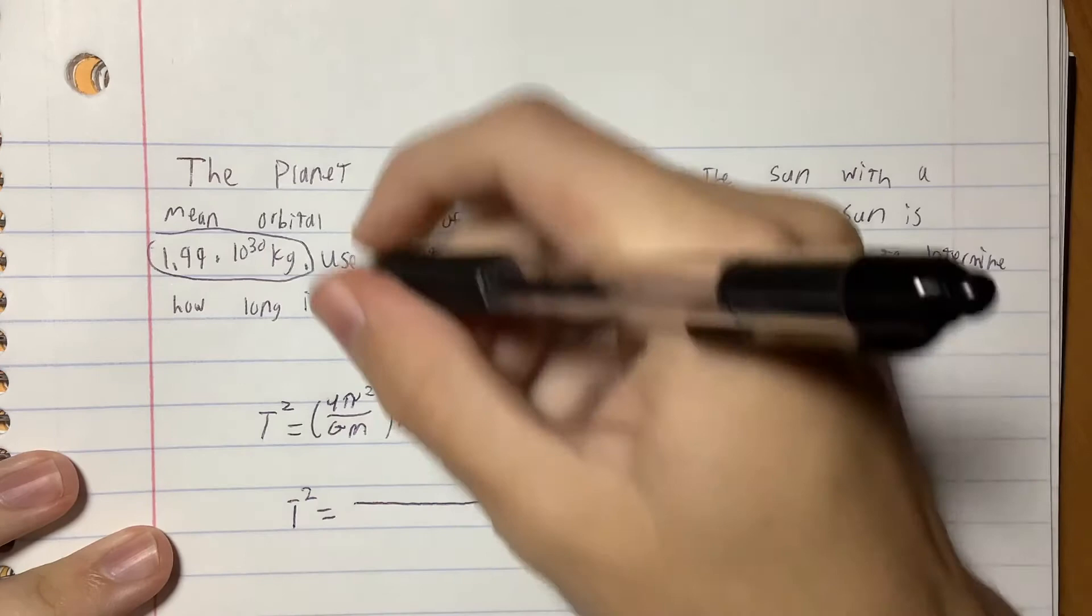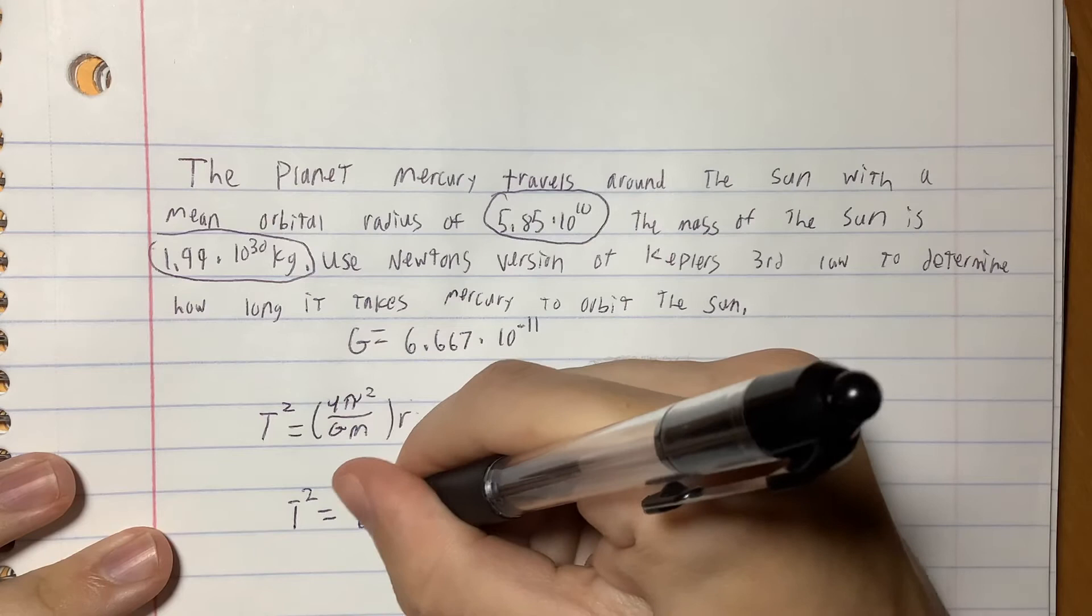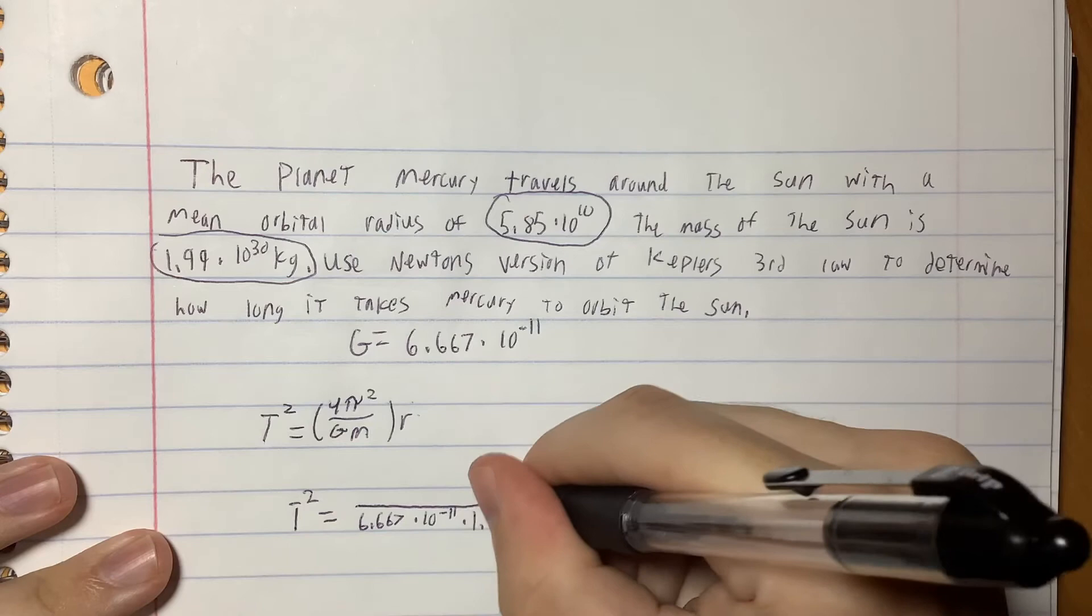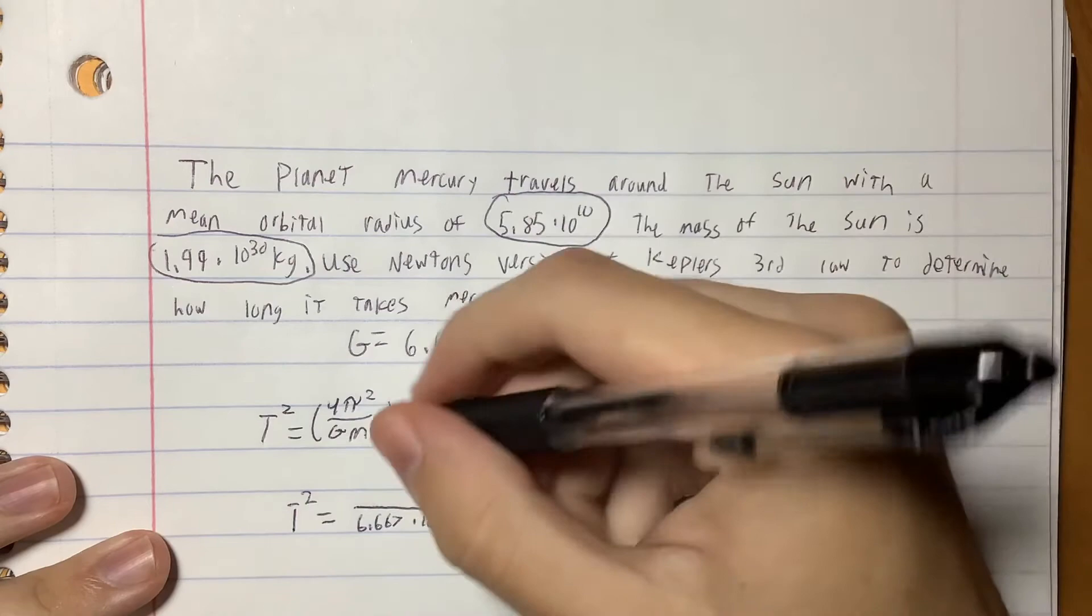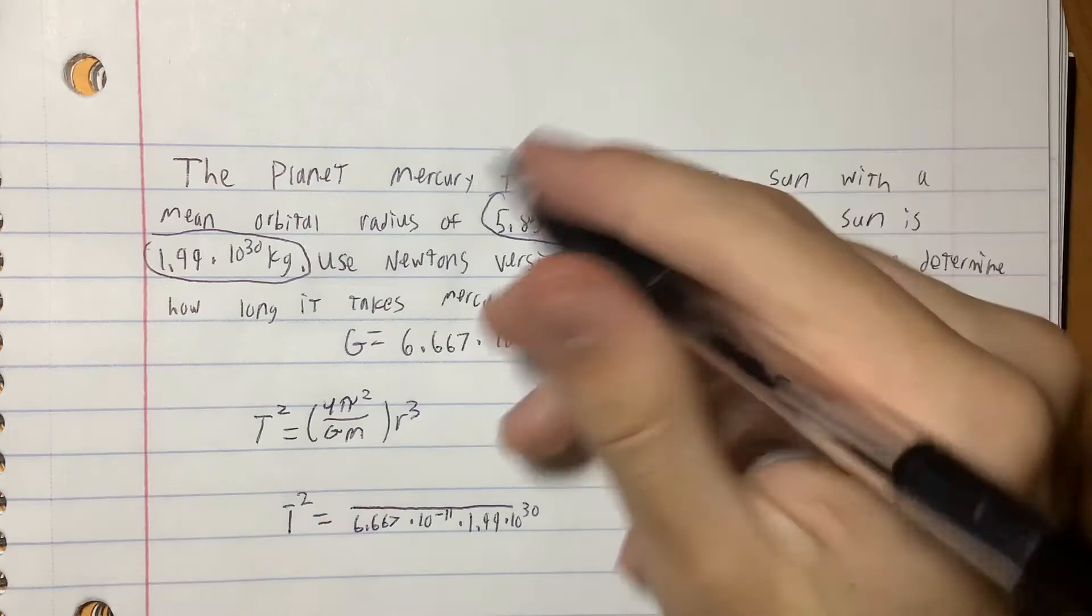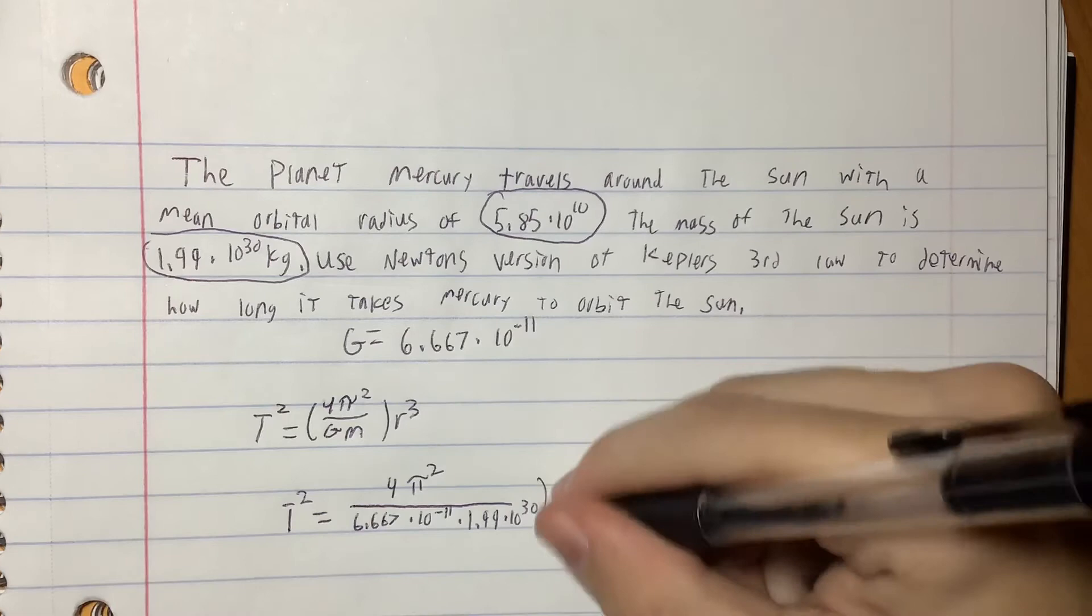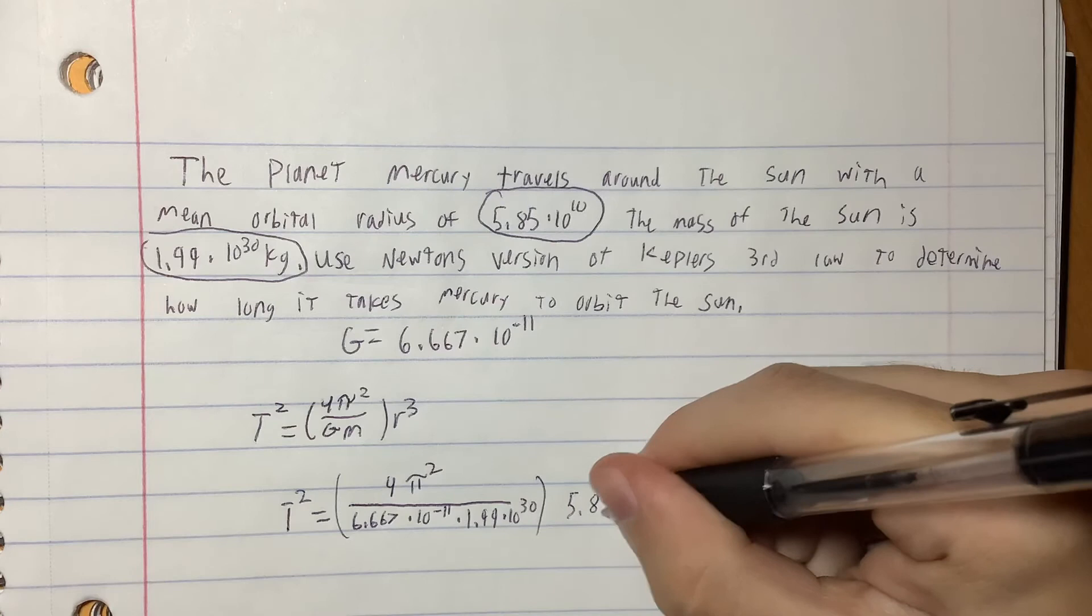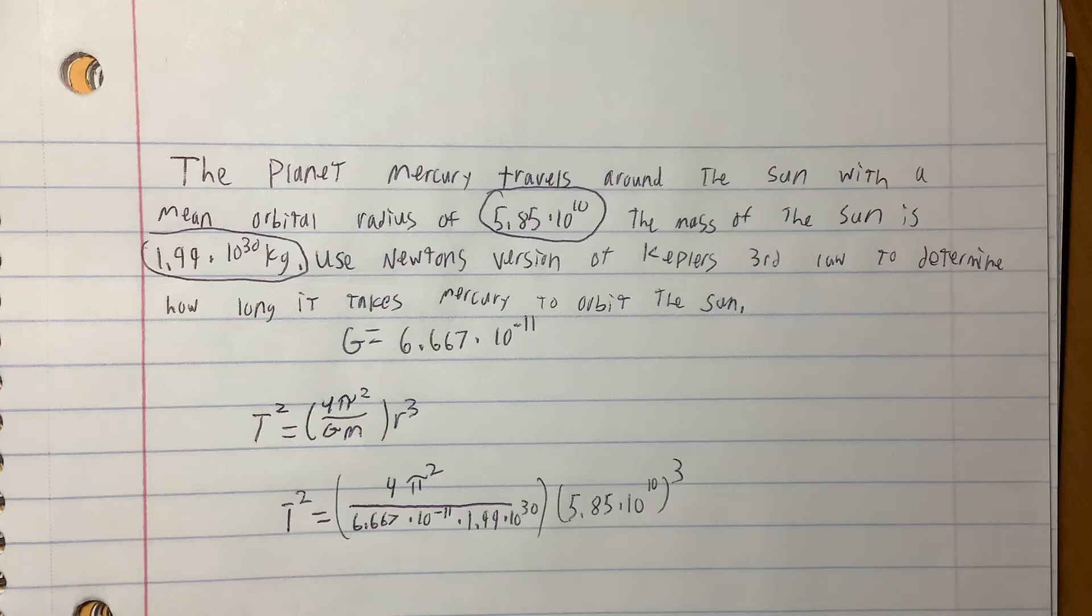T squared will equal, so we'll start off with the gravitational constant 6.667 times 10 to the negative 11th times the mass 1.99 times 10 to the 30th. On top of that we'll have 4 pi squared, and then all that will be timed by 5.85 times 10 to the 10th cubed.